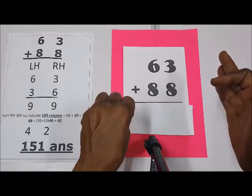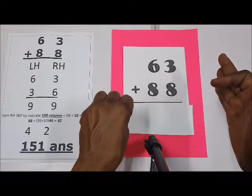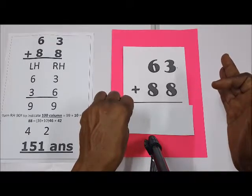36 plus 10 is 46. We've already added 36, when I turn it 10, so we have got 46.